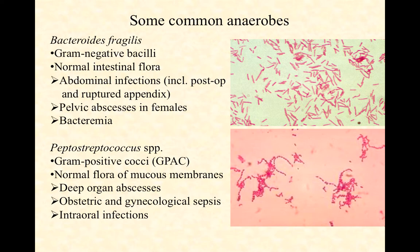Interestingly, both of them are part of our normal flora — the bacteria that normally colonize us. There's a term for that: we call them opportunistic pathogens, because when things are going well, they don't infect us. If they get in the wrong place, gain an advantage, or we get weakened for some reason, all of a sudden we've got a pathogen on our hands.